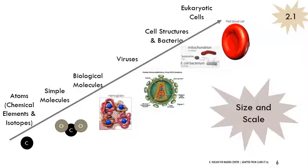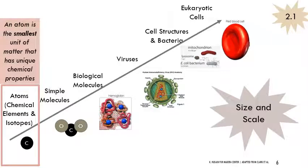We're getting orders of magnitude larger as we move up this arrow. So we're going to focus first on atoms and clarify the terms elements and isotopes. Keep in mind that an atom is the smallest unit of matter that has its own set of unique chemical properties. A key idea for today is not just what these units are, but what properties are associated with them as well — tying together both structure and function.